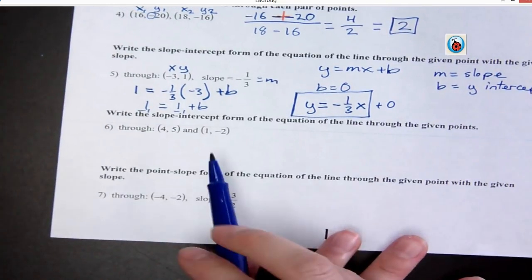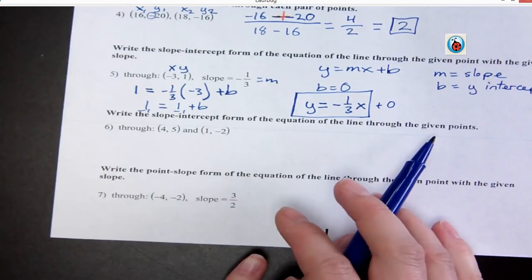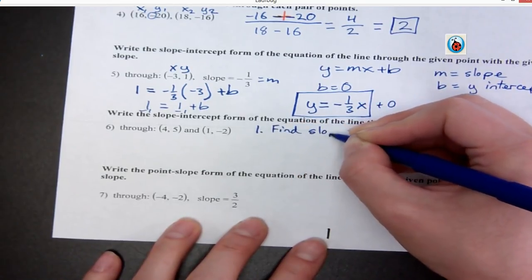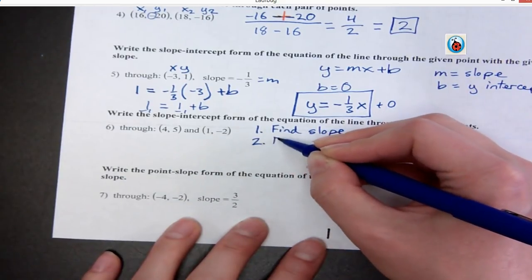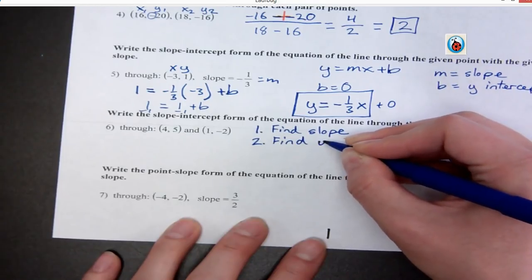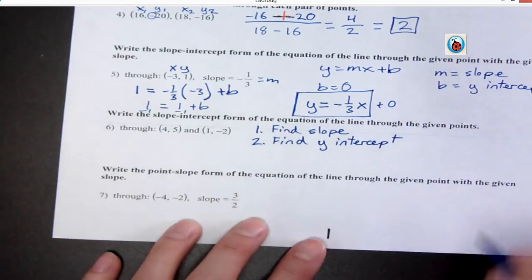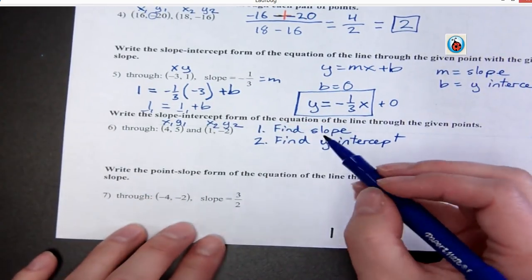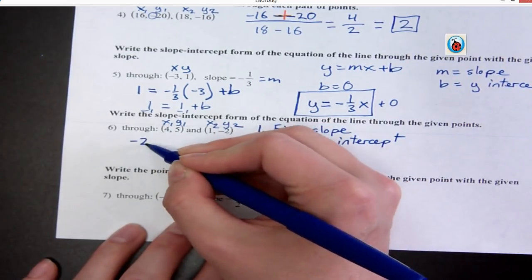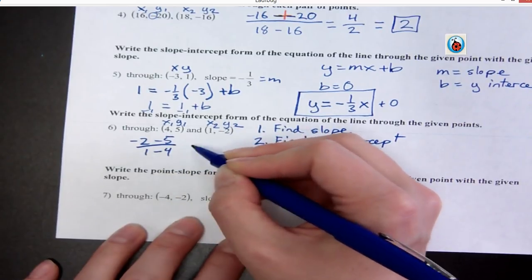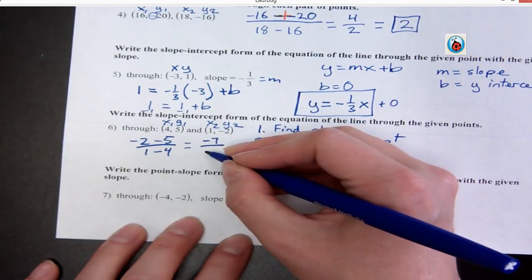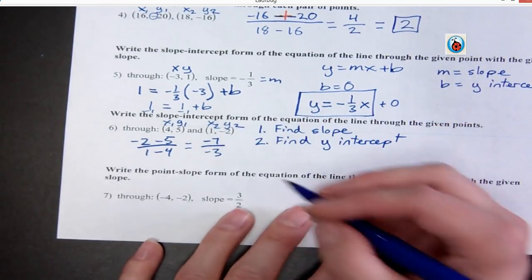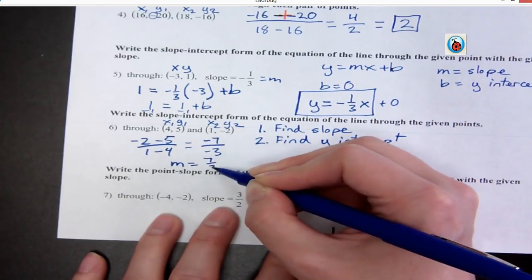All right, next we're going to do it, slope-intercept form of the equation, the line through the given points. And so that means first I have to find my slope, and then we'll do what we did there and find our Y-intercept B, which is B. All right, so I'll label them and plug them into my slope formula first. So negative 2 minus 5 over 1 minus 4 equals negative 7 over negative 3, which means my slope, my M, equals 7 over 3. So the negatives cancel out.